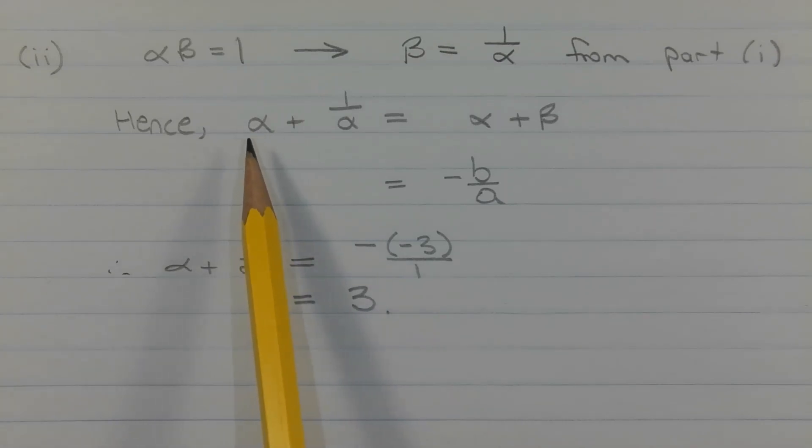Hence, the expression alpha plus 1 over alpha can be expressed in terms of alpha and beta by substituting beta for 1 over alpha. So alpha plus 1 over alpha equals alpha plus beta.